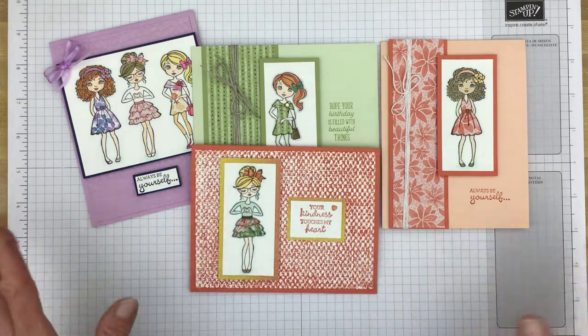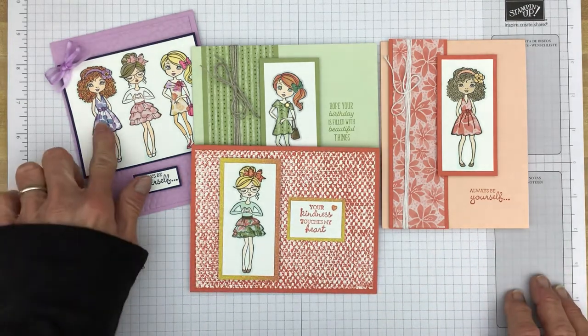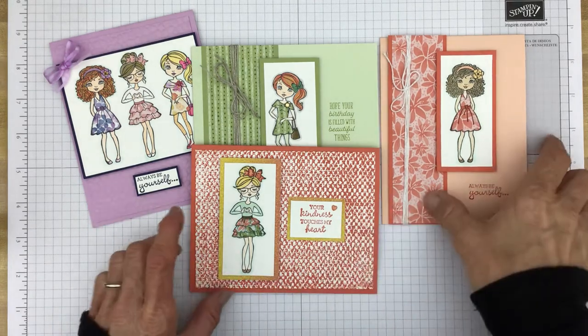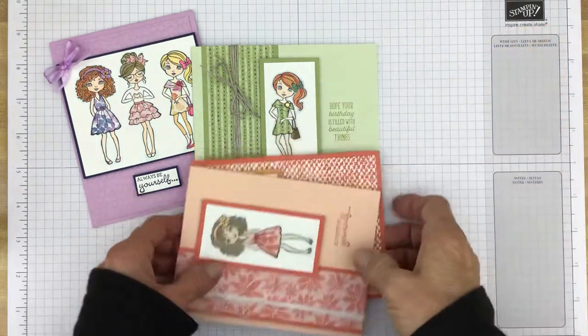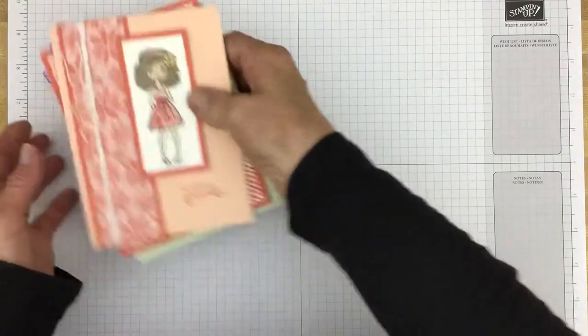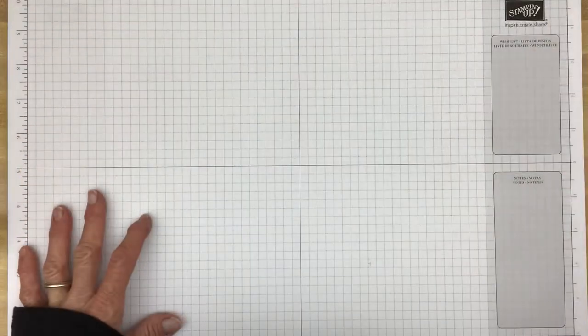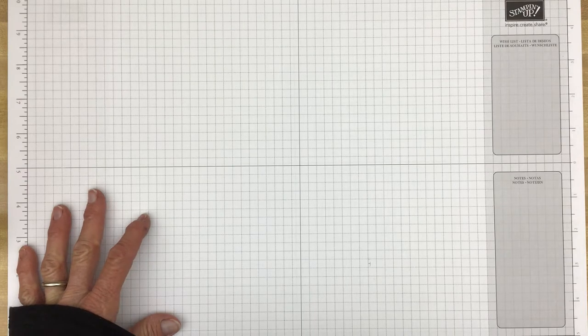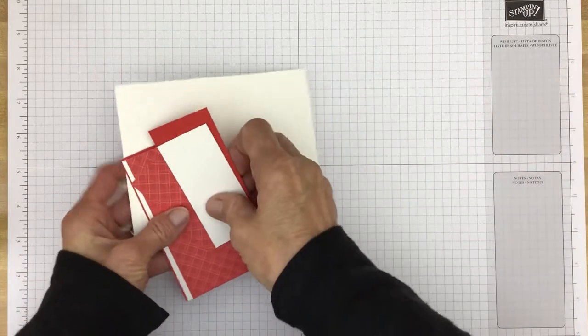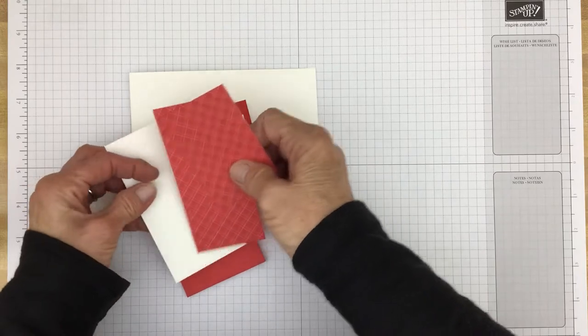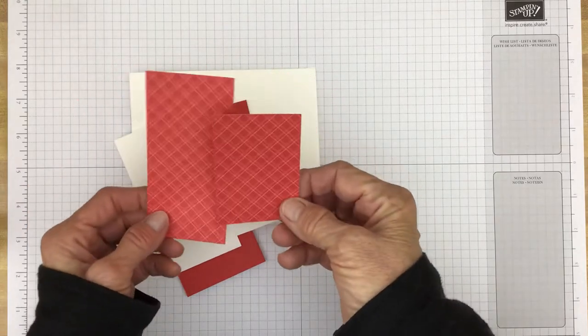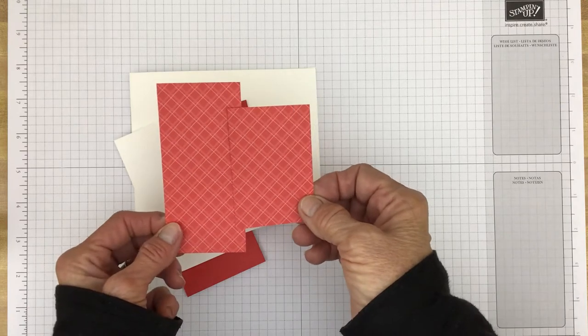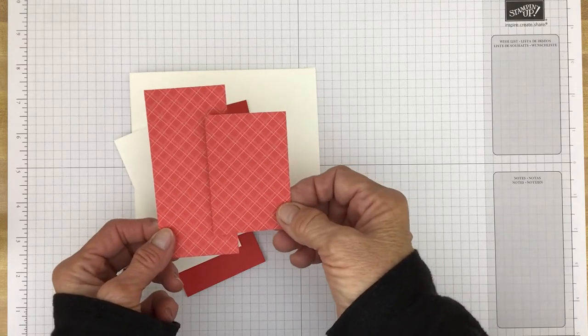We're going to use this image, this girl right here, but we're going to use some poppy parade and some DSP that is from the new annual catalog. So let's see what we're going to need to make this card. Here is the designer series paper, the six by six brights, and this is the poppy parade.